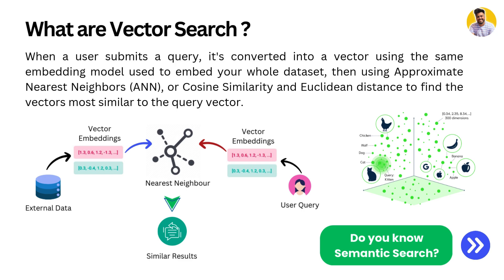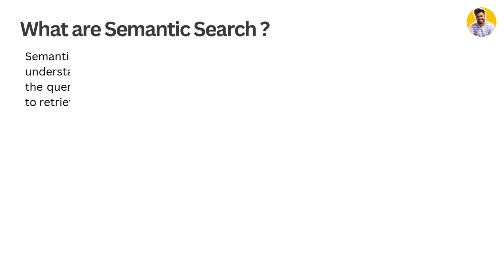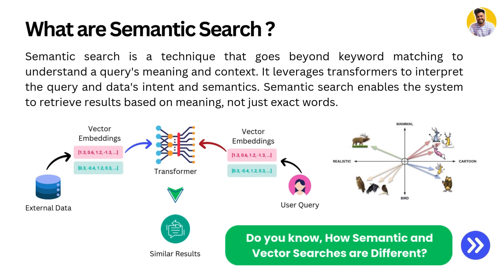There is another term called semantic search. Semantic search is a technique that goes beyond vector search or keyword matching to understand the query's meaning and context. It uses transformers or large language models to interpret the query's intent and context — understanding the semantics behind the query — enabling the system to return results based on meaning.